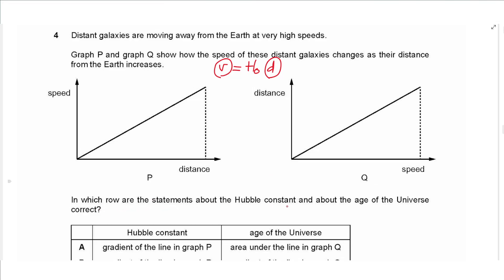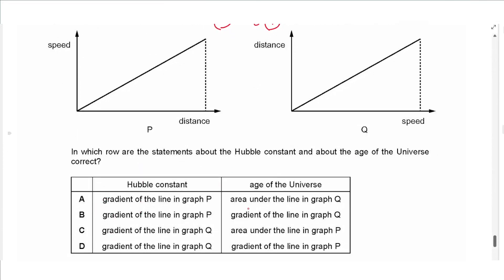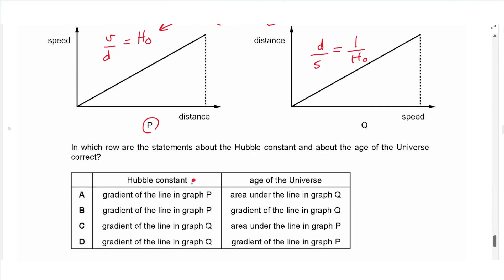The last question says, which row contains statements about the Hubble constant and about the age of the Universe that are correct? The choices contain gradients and area under graph. The gradient of the first graph P is equal to speed divided by distance, which is equal to the Hubble constant from this equation. The gradient of Q is equal to distance over speed, which is 1 over the Hubble constant. So, these have opposite gradients. How can we calculate the Hubble constant? It's the gradient of P, not Q. So, it's either A or B. And the age of the universe can be calculated using the equation 1 over the Hubble constant. This is how you calculate the age of the universe in seconds. So, this is actually the gradient of the graph Q, not the area under the graph Q. So, the answer is B.